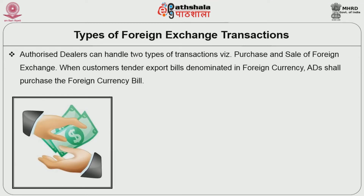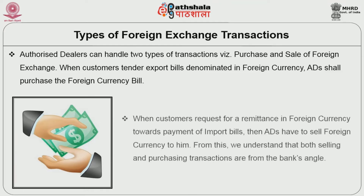Now we will see the types of foreign exchange transactions. Authorized dealers can handle two types of transactions: purchase and sale of foreign exchange. When customers tender export bills denominated in foreign currency, the authorized dealers purchase the foreign currency bill. When customers request a remittance in foreign currency towards payment of import bills, the authorized dealers sell foreign currencies to them. From this we understand that both selling and purchasing transactions are viewed from the bank's angle.